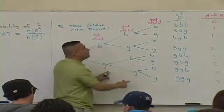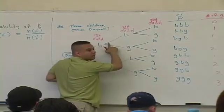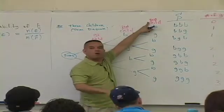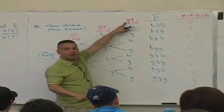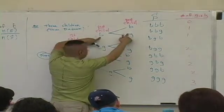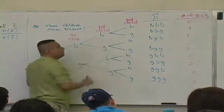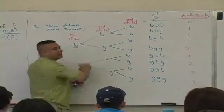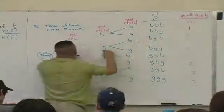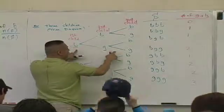Now we're going to do the third child. The sex of the third child is independent of the sex of the prior two. Having that third child means you can have either a boy or a girl. So from each second-child outcome, for the third child you get a boy or a girl. If you follow the branches — that's why they call it a tree diagram, it's on its side — you generate every possible outcome: BBB, BBG, BGB, BGG, and so on.